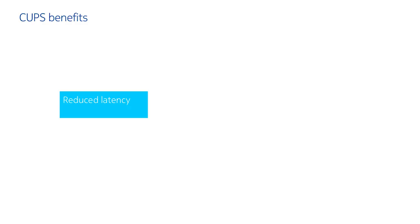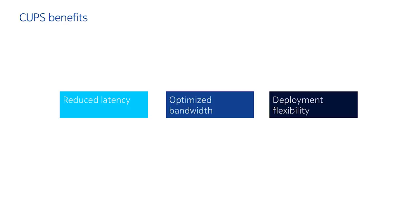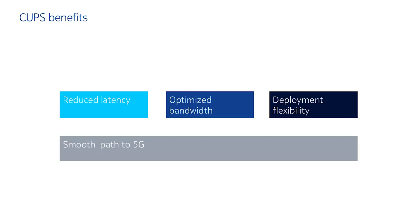This concludes my demo on CUPS. In this demo we have seen that the new network architecture optimizes the bandwidth for the end user by doing local breakout, it reduces the end-to-end delay for the end user, it allows for flexible deployment and independent scaling of control and user plane, and it also allows for a smooth path to 5G because it meets the delay requirements of 5G. Thank you for your attention.